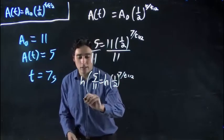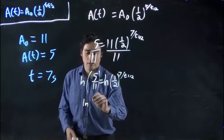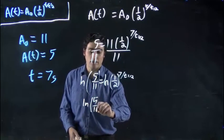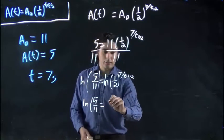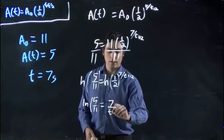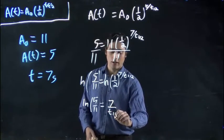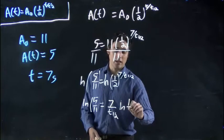So I'm taking ln of all of this, and then we're applying the power rule. Remember, bring this down in front. So I have ln of 5/11 equals 7 over t₁/₂ times ln of 1/2.